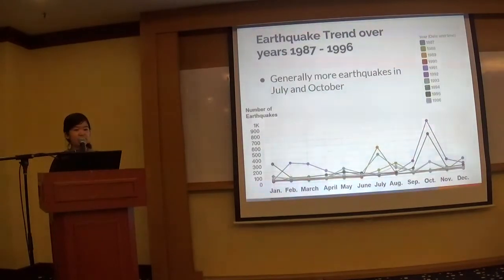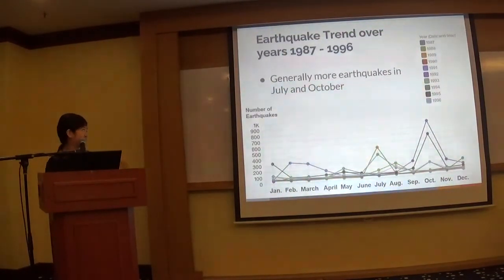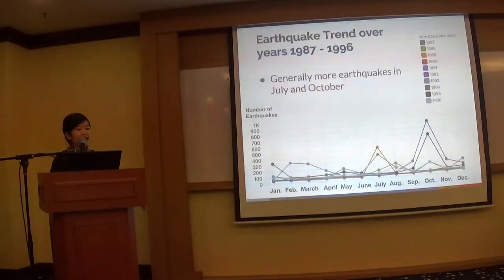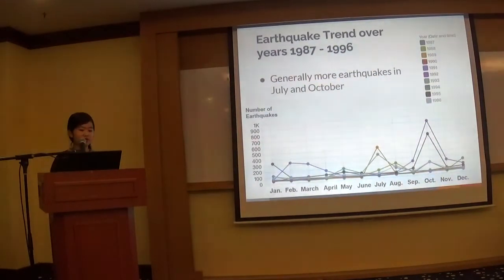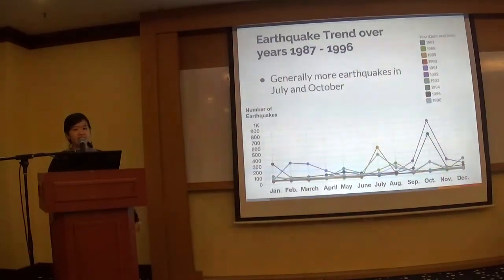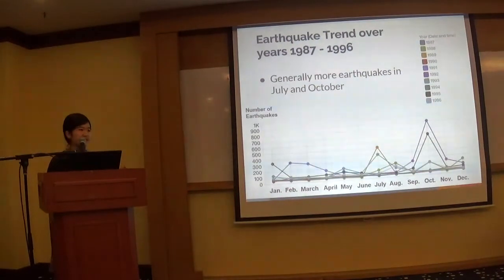This is the earthquake trend from 1987 to 1996. As I said, the vertical axis now goes up to 1,000. Here we can see a slightly clearer trend matching what we saw in the general view: there are more earthquakes in July, October, and March, and we can see how these months tend to have more earthquakes than other months.